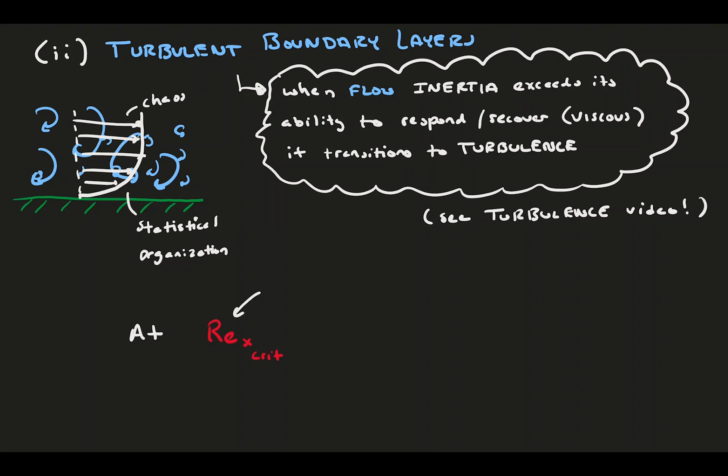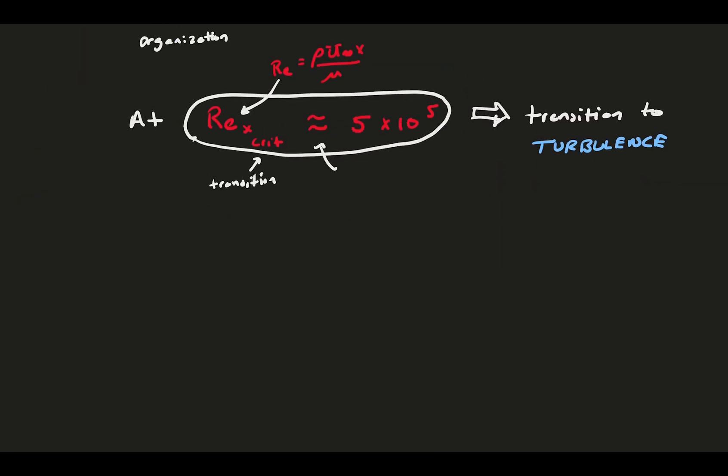Our goal is to be able to predict this average state. The transition is defined by the flow Reynolds number, based on the freestream velocity and the distance downstream from where the boundary layer started. This is called the critical Reynolds number, at which point it transitions to turbulence. For a smooth flat plate, this is roughly 500,000.